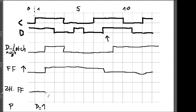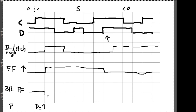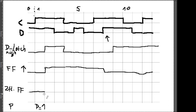Das zweite ist: if Falling Edge C – also wenn wir eine Rückflanke auf dem Taktsignal haben, den Wechsel von 1 zu 0 – dann gilt die Zuweisung Q gleich P. Q bekommt den Wert von P zugewiesen. Wir müssen wissen, wo unsere Rückflanke ist. Am Anfang welchen Taktes haben wir eine Falling Edge auf dem Taktsignal – wo geht C von 1 auf 0?